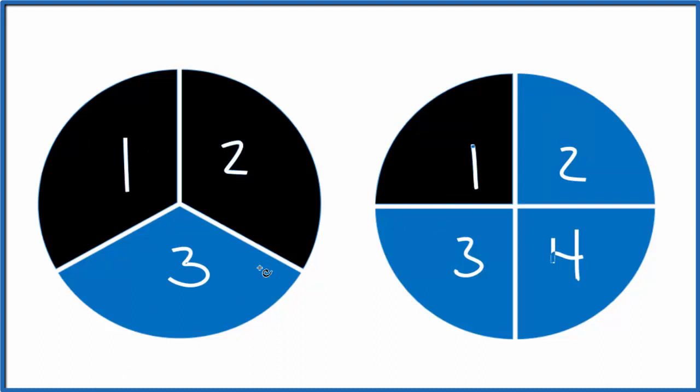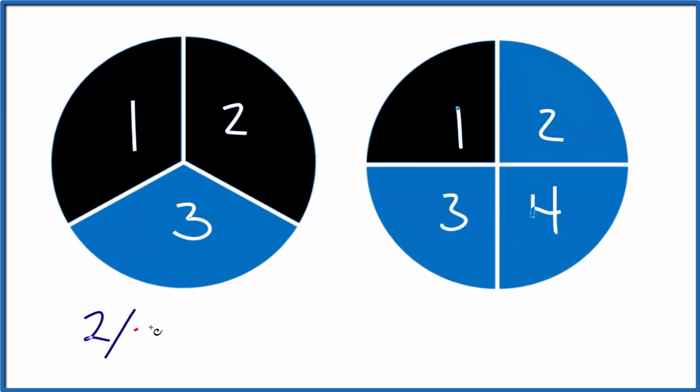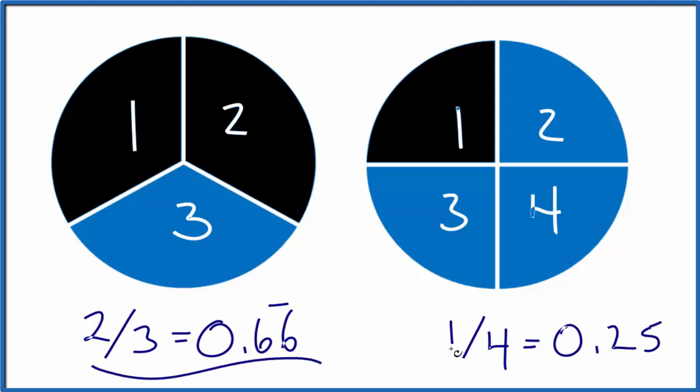We have two-thirds of the circle filled in here. If we divide two by three, we get zero point six six, and that number repeats. Over here we have one part of the whole, so one over four. We do the division and get zero point two five. We can see again that two-thirds is larger than one-fourth.